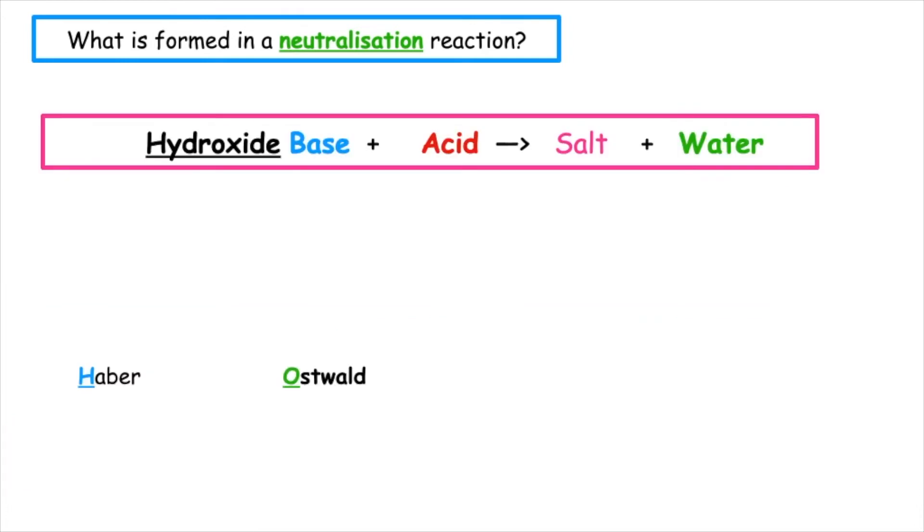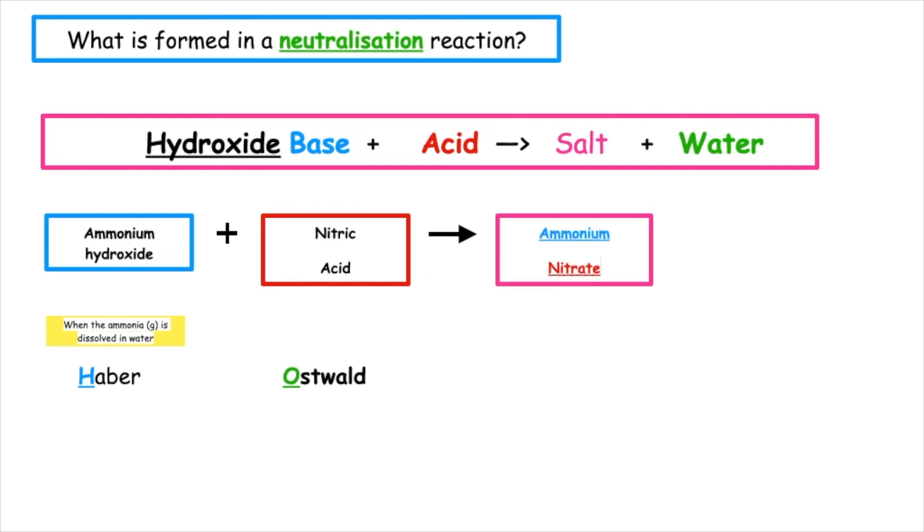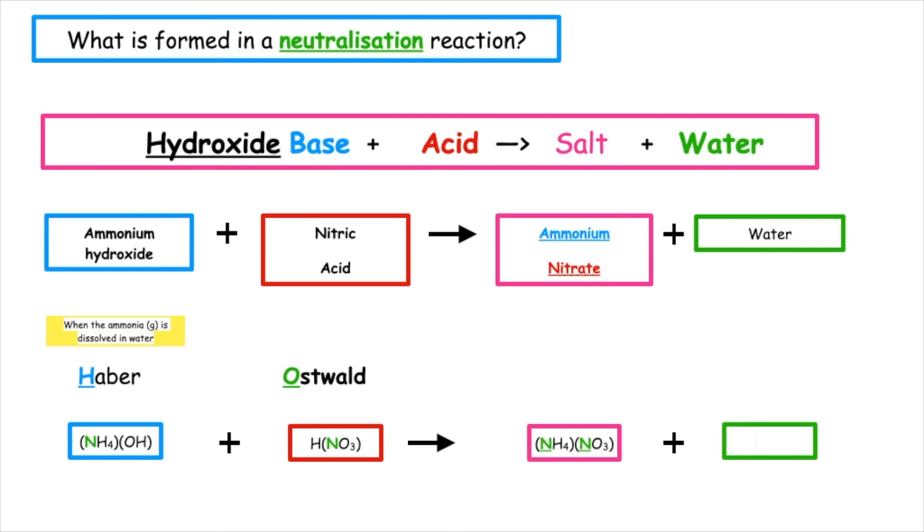If we were to take a hydroxide base such as ammonium hydroxide which is made in the Haber process and react with nitric acid which is made in the Oswald process, the name of the salt produced would be ammonium nitrate. We would also produce water as a by-product. The formula for our salt which is our fertilizer, ammonium nitrate, is NH4NO3. This only contains the essential element nitrogen, N.